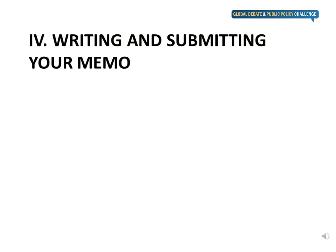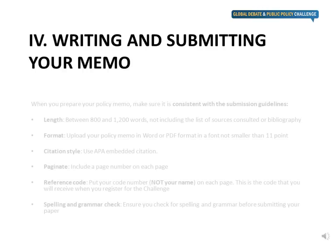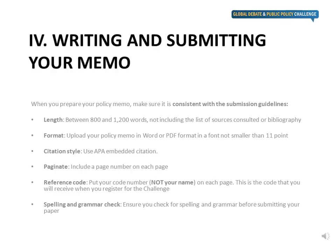We hope these checklists are helpful for you. The focus so far was about the content, but you also need to make sure you follow our submission guidelines. Your memo must be between 800 and 1,200 words long, not including the list of sources or your bibliography. Upload your memo in a Word or PDF format in a font not smaller than 11 point, and make sure you use APA embedded citation style. Include a page number on each page and put your code number — not your name — on each page. This is the code that you received when you registered for the challenge. And finally, make sure you complete both a spell and grammar check before sending in your paper.